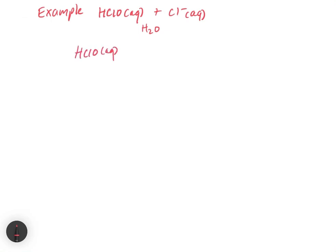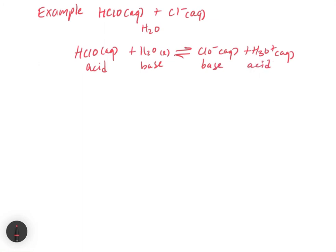So when we write this reaction, it's going to be HClO aqueous as our acid plus H₂O as our base, in equilibrium with ClO⁻ aqueous plus H₃O⁺ aqueous. ClO⁻ is our conjugate base and H₃O⁺ is our conjugate acid. Looking at acid strengths, H₃O⁺ is a stronger acid than HClO — it's higher on the chart — so in this case we're going to favor the reactants, because H₃O⁺ pushes back harder toward HClO.